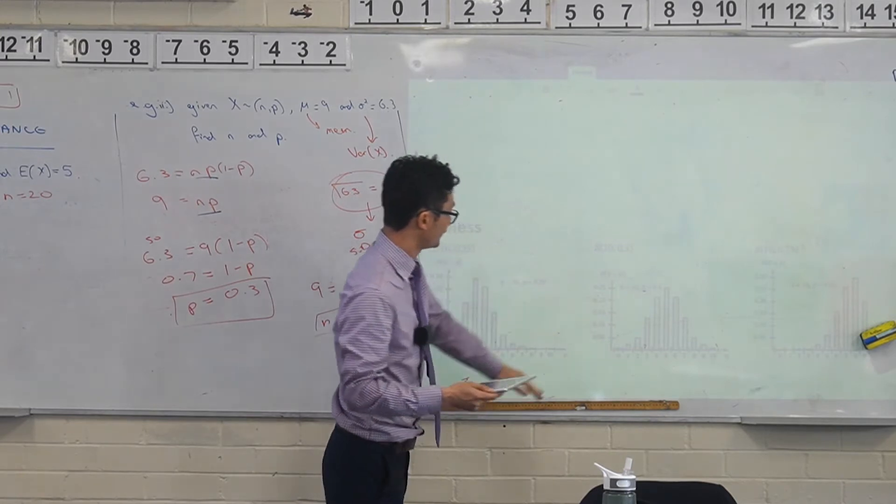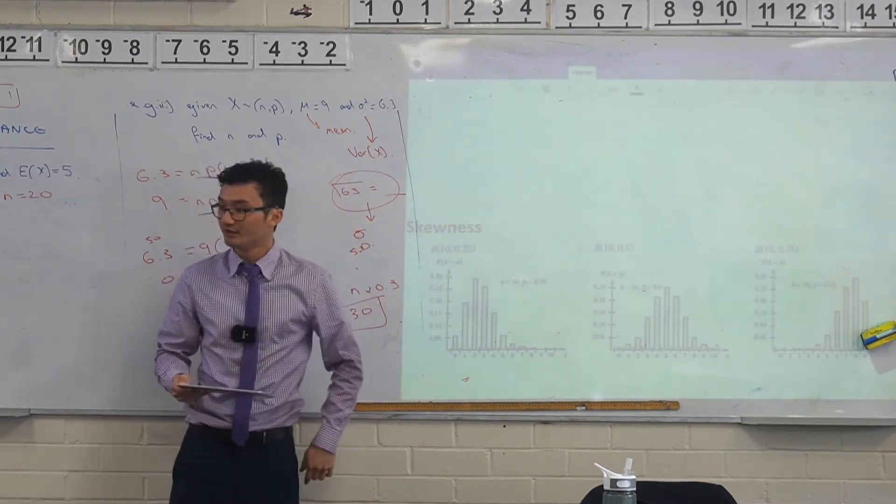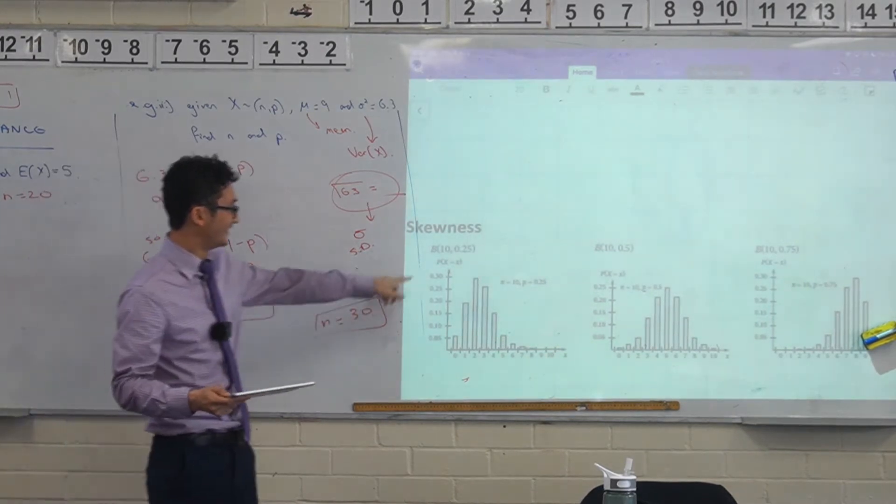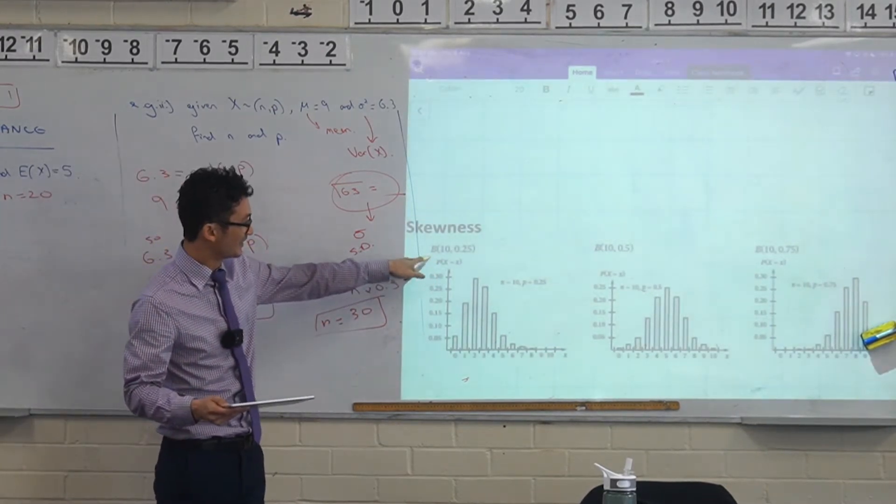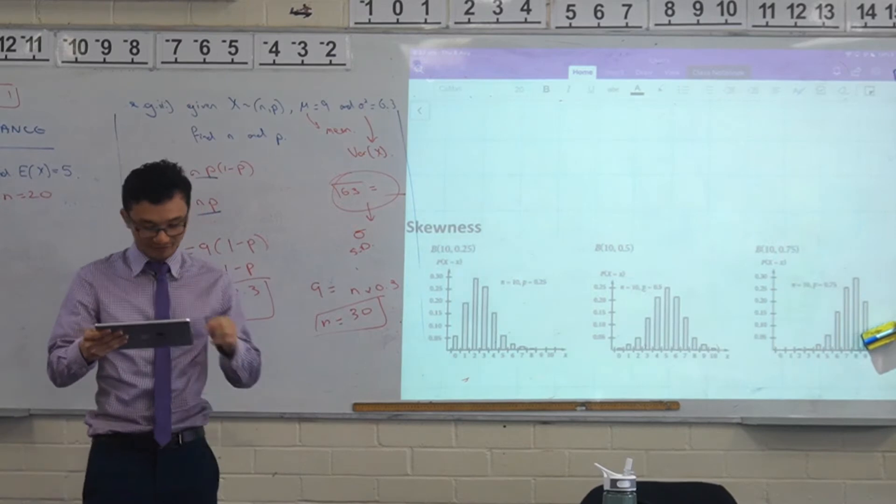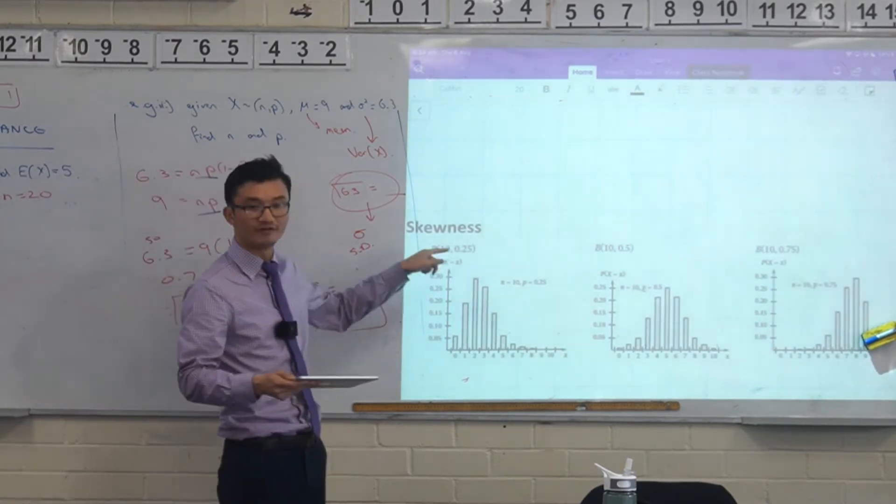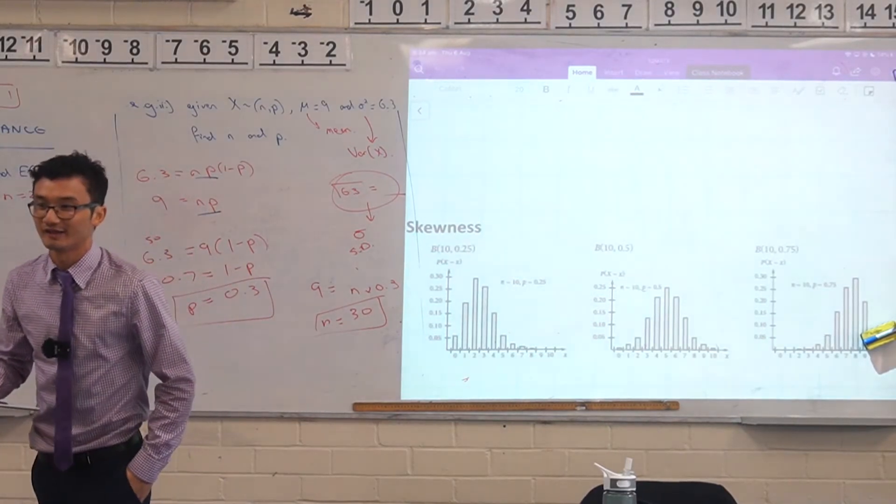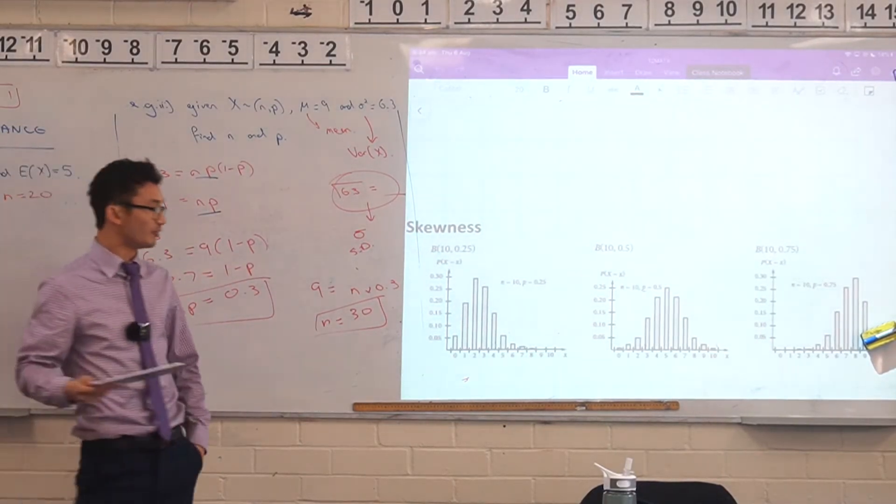So here's what they look like over here and we've got the B here which I forget to leave off. Remember what this guy means? Number of trials and what's the second number? P, which is the probability of success.